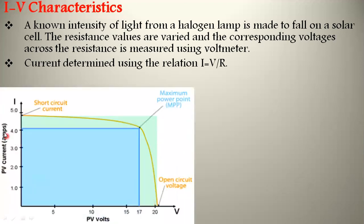This is the IV characteristics of the solar cell. Three terms are important in the IV characteristics diagram: open circuit voltage, short circuit current, and maximum power point. The voltage is on the x-axis and the current is on the y-axis.